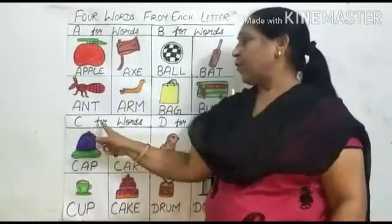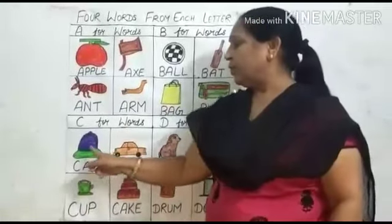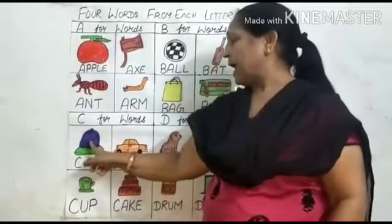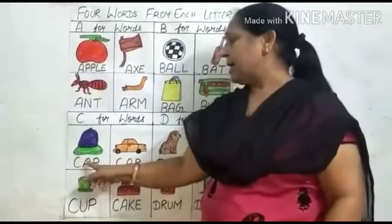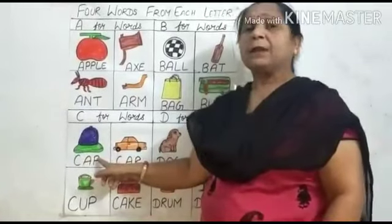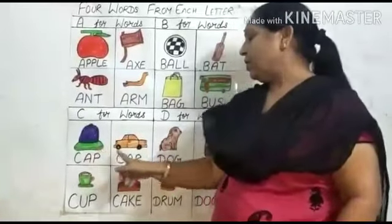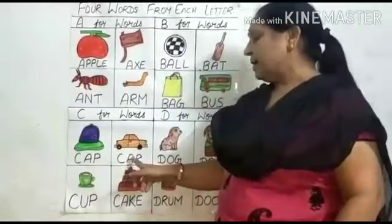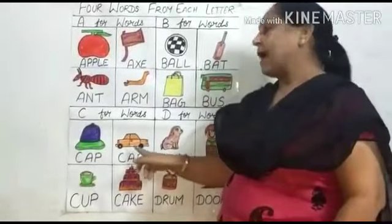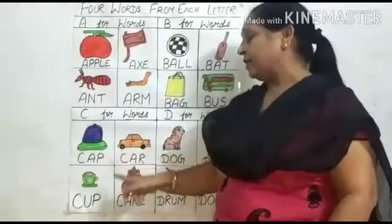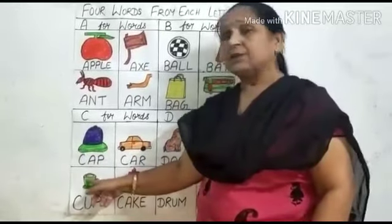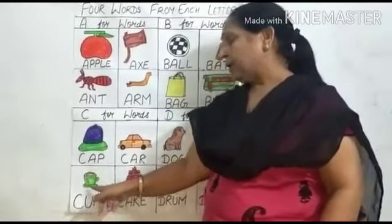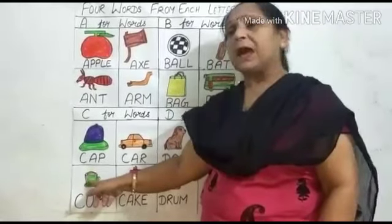C for words. What is this? This is a cap. C-A-P. Cap. Cap means topi. What is this? This is a car. C-A-R. Car. Car means gari. What is this? This is a cup. C-U-P. Cup. Cup means pyala.